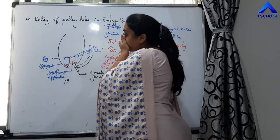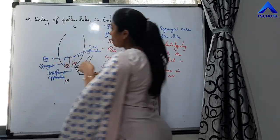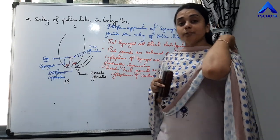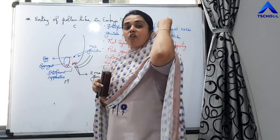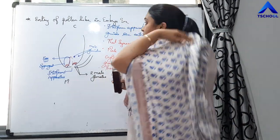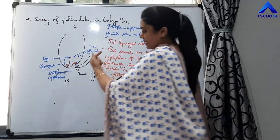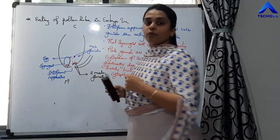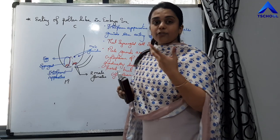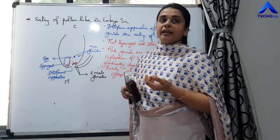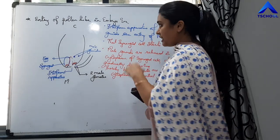This is clear. The most common mode of entry of the pollen tube into the embryo sac is through the micropyle end. It can also enter through the chalazal end or through the integuments, and there are different names given to these modes.